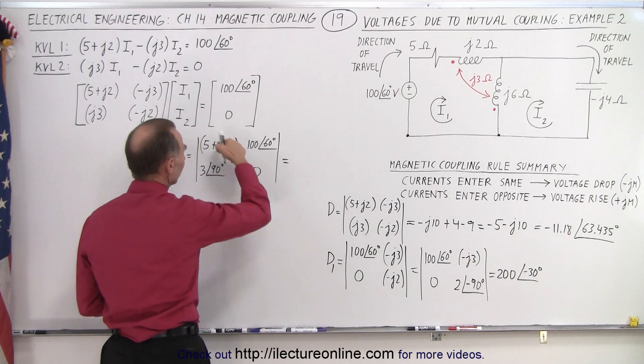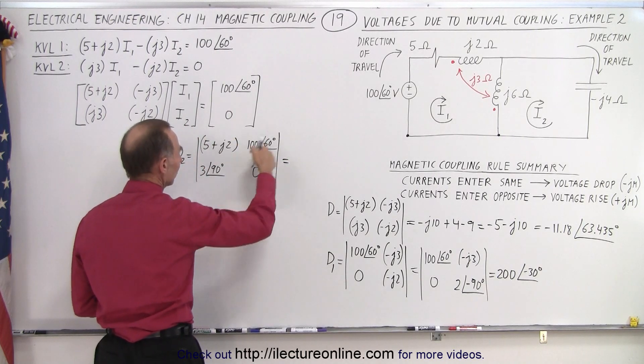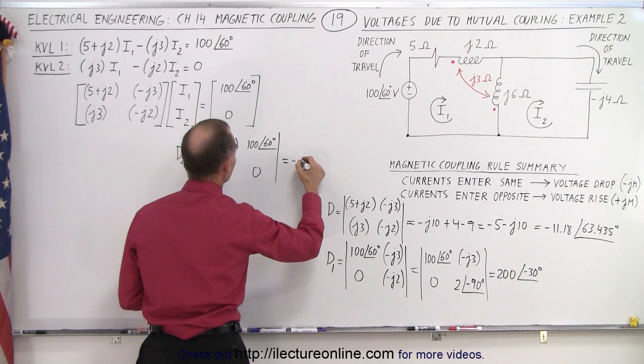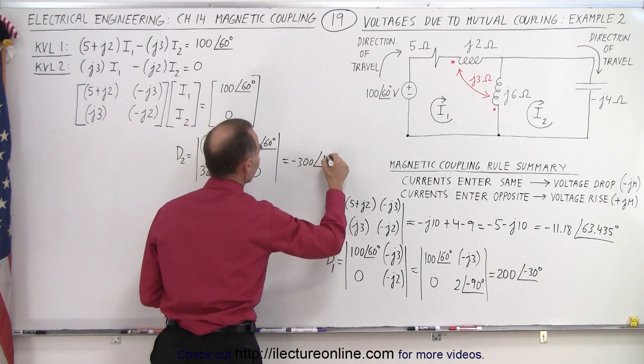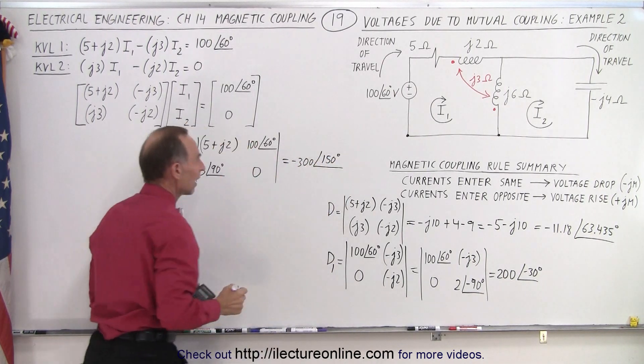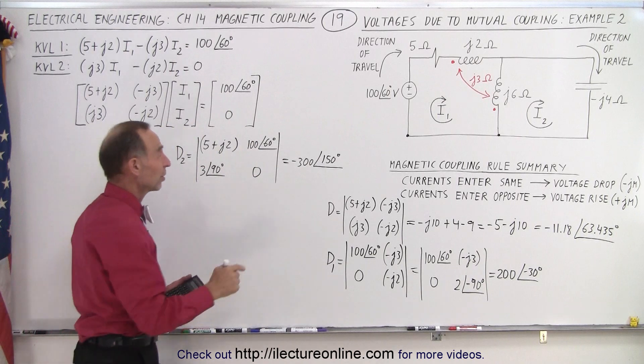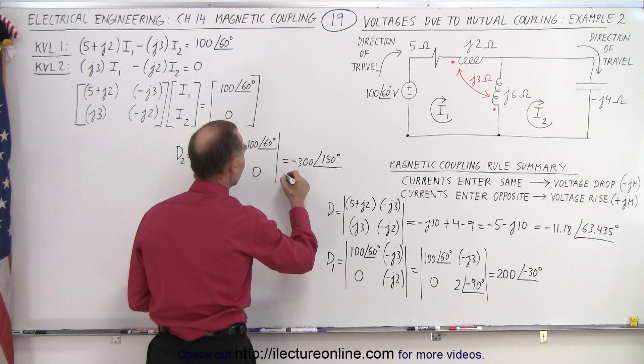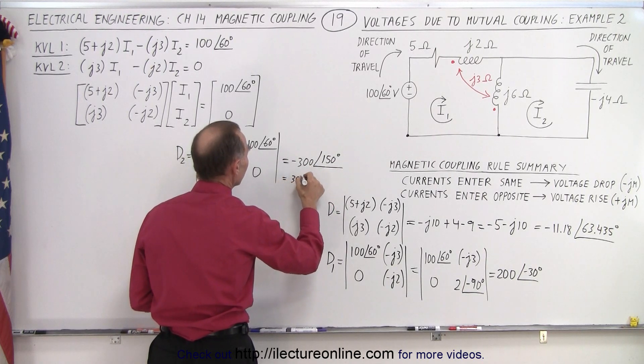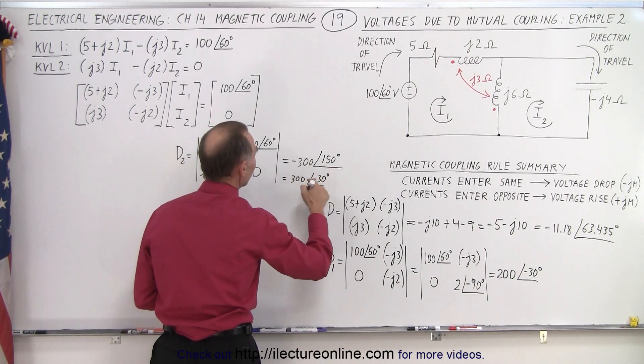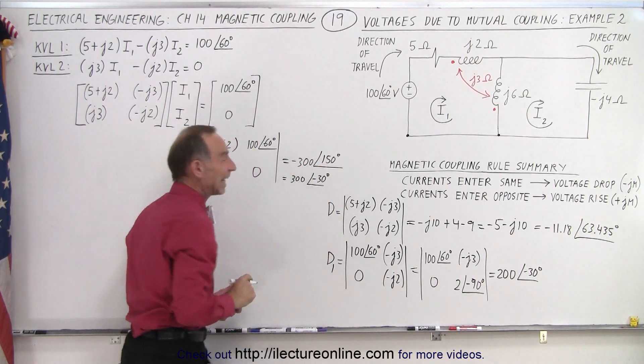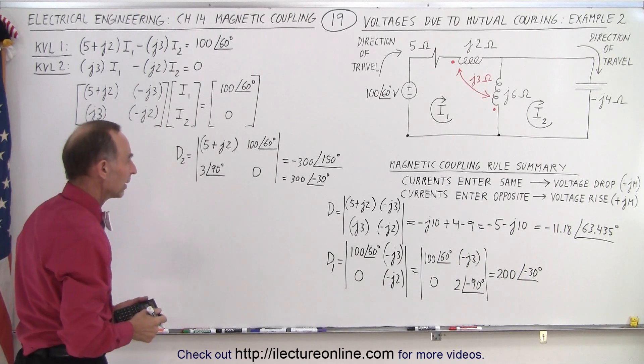And this is equal to, well, this product of course is 0. Now this product has to subtract this product, that becomes a minus 300 with a phase angle of 60 plus 90, which is 150 degrees. You could also write it, you could take this negative and put it in here and add 180 degrees or subtract 180 degrees. So this could be written as 300 with a phase angle of minus 30 degrees. By subtracting 180 degrees, this becomes minus 30, that gets rid of the negative sign.